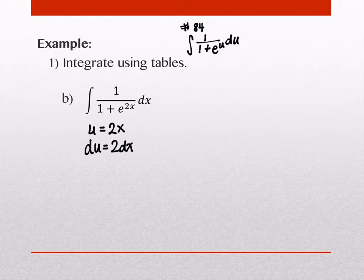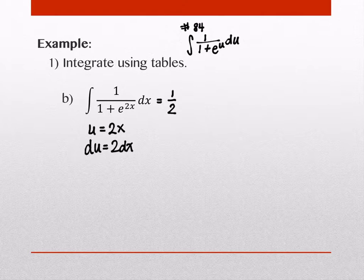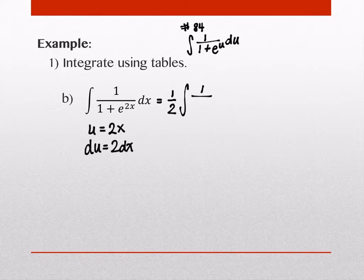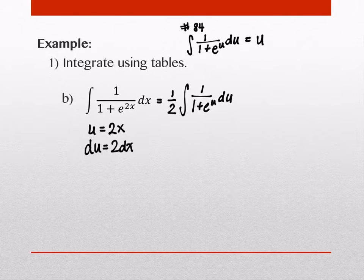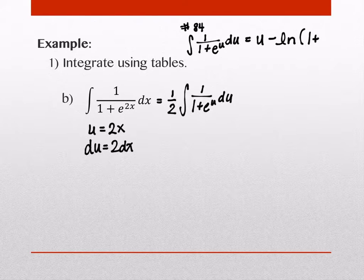We just put a fraction in to compensate. And the fraction that we would put in to compensate, of course, is 1 half. So this is 1 half of the integral of 1 over the 1 plus e to the u du, which exactly now matches the table form that we actually identified. And this one on the table tells us that this is u minus the natural log of 1 plus e to the u plus c.